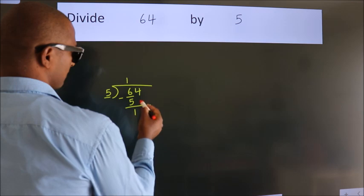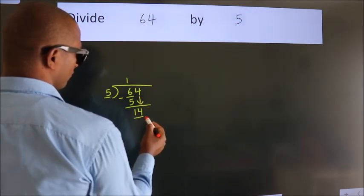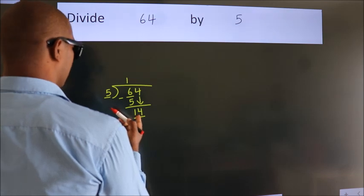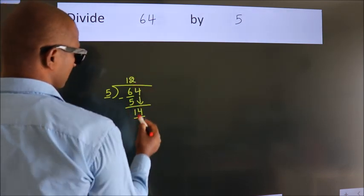After this, bring down the beside number. So 4 down. So 14. A number close to 14 in 5 table is 5 times 2 is 10.